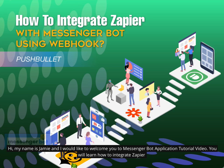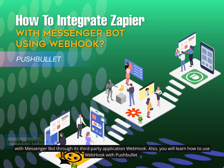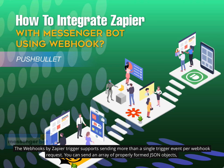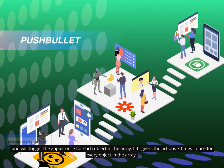You will learn how to integrate Zapier with Messenger Bot through its third-party application Webhook, and how to use Webhook with PushBullet. The Webhooks by Zapier trigger supports sending more than a single trigger event per Webhook request. You can send an array of properly formed JSON objects, and it will trigger Zapier once for each object in the array — triggering the actions once for every object.